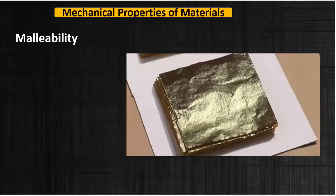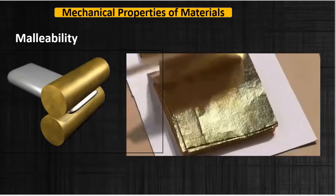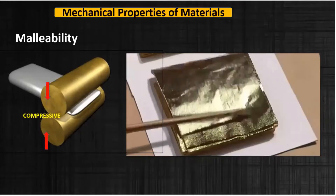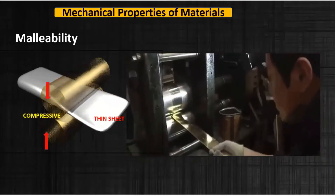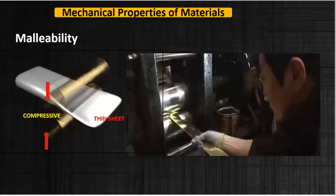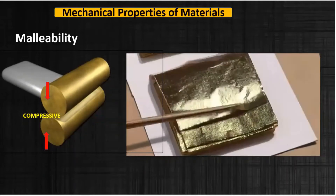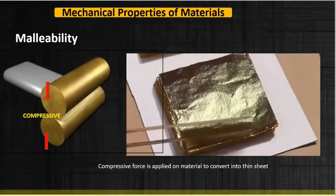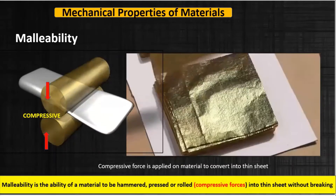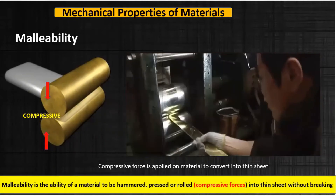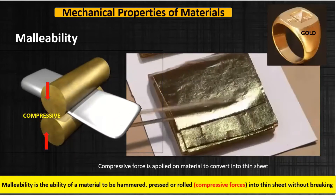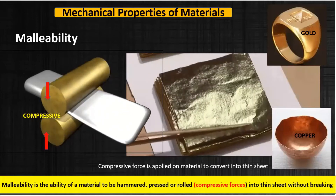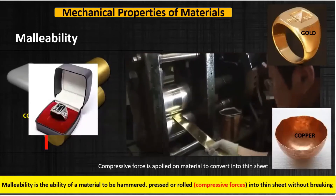Now let's understand malleability. When aluminum or a steel blade is inserted between two rollers, it starts deforming into thin sheets without any cracks under compressive force. So malleability is the ability of a material to be hammered, pressed, or rolled into thin sheets without breaking. Gold, copper, and silver are the most malleable materials.